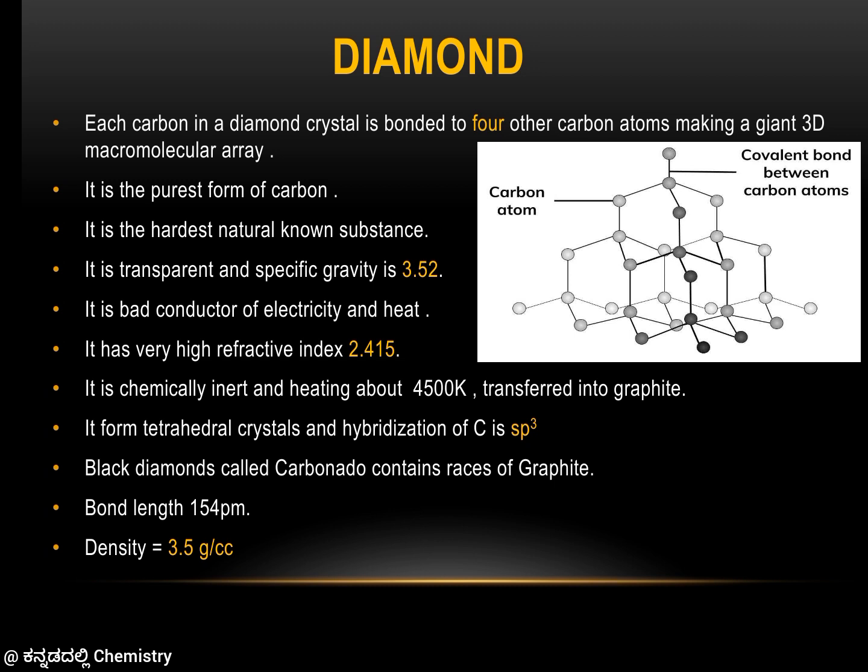Diamond is transparent with a specific gravity of 3.5. The carbon-carbon bond length is 154 pm and melting point is 4500°C. Its refractive index is 2.415. The valency of carbon is 4, but all electrons are used in bonding, so diamond is a bad conductor of heat and electricity. It has a tetrahedral structure with sp3 hybridization.